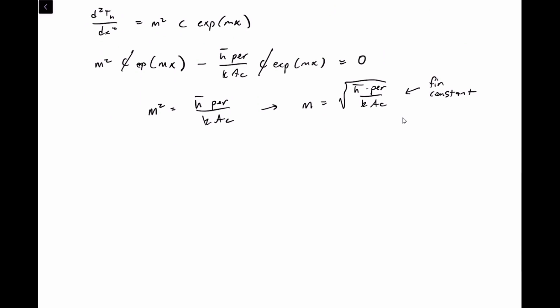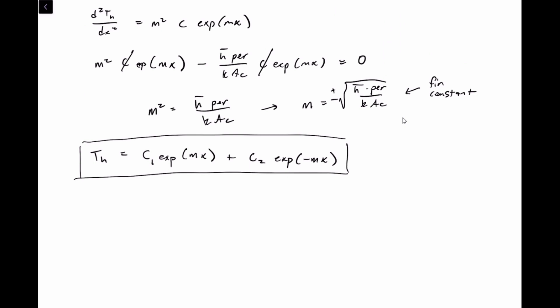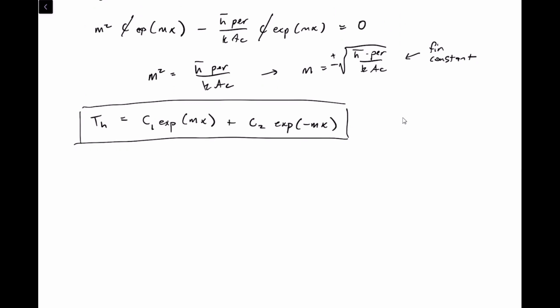Now we have our homogeneous solution, but there's one complication: since m² equals h-bar·perimeter / k·Ac, m could be plus or minus that square root, because squaring removes the sign. So the full homogeneous solution is Th equals C1·exp(mx) plus C2·exp(−mx), with two unknown constants.